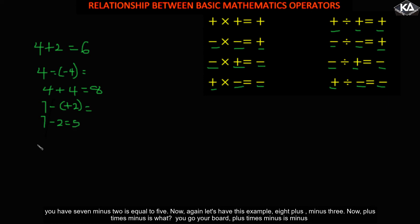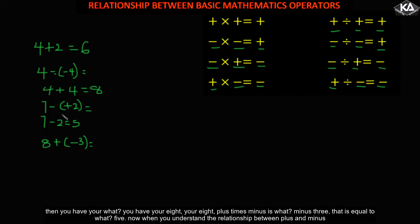Now let's take another example: eight plus minus three. Plus times minus is minus, so you have eight minus three, which gives us five.